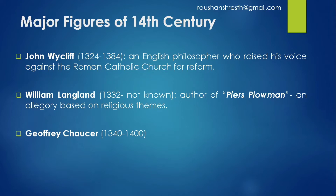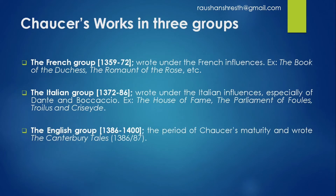The third figure of the 14th century is Geoffrey Chaucer. Chaucer's works are divided into three categories: the French group, the Italian group, and the English group.